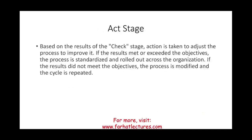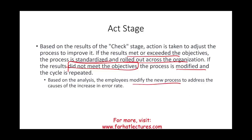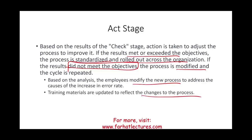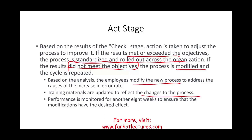Based on the results of the Check stage, in the Act stage we take action to adjust the process and improve it. If results met or exceeded expectations, we standardize the process and roll it out across the whole organization. If the process did not meet objectives, it is modified and the cycle is repeated — we go back and Plan, Do, Check, and Act again. For example, employees modify the new process to address the root cause of the increased error rate, training materials are updated, and performance is monitored for another eight weeks to ensure the modification has the desired effect.